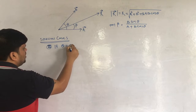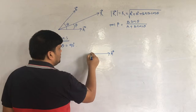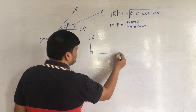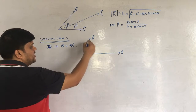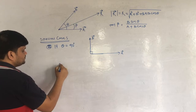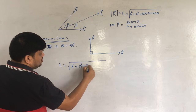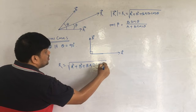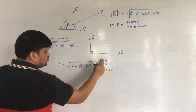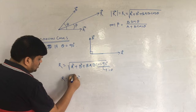Special Case 3: if θ = 90°. A vector is along one direction and B vector is perpendicular to it. Putting cos90° = 0 into the formula: R = √(A² + B² + 2AB·0) = √(A² + B²).